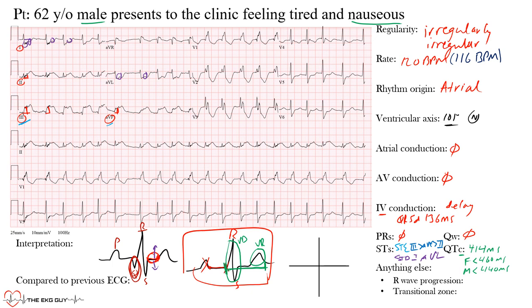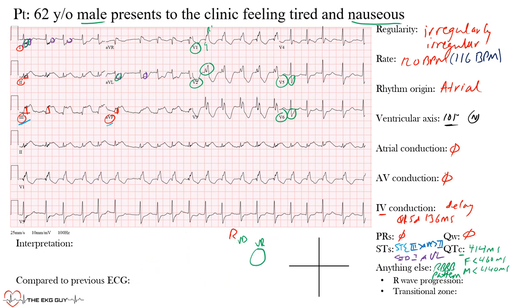There's one more important finding: in the right precordial leads, we see RSR' complexes — those 'rabbit ears' — with notching, and slurred S waves in the lateral leads. These slurred S waves are not depressed, just slurred. This pattern is a right bundle branch block. It would be interesting to compare this to the prior EKG, because a functional right bundle branch block in the setting of this rhythm may represent Ashman phenomenon.